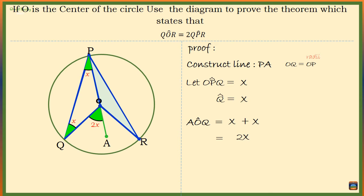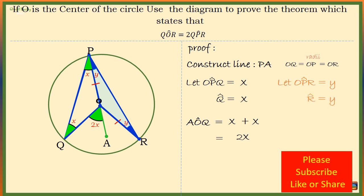Now let's shift our focus to triangle POR. Triangle POR is an isosceles triangle since OP is equal to OR — both are radii. Now suppose angle OPR is equal to Y; it means angle ORP is also equal to Y. These two are the base angles of the isosceles triangle.